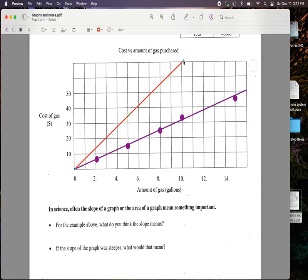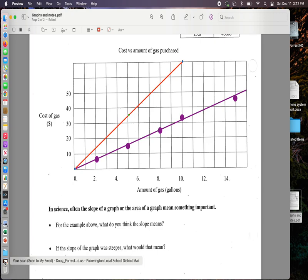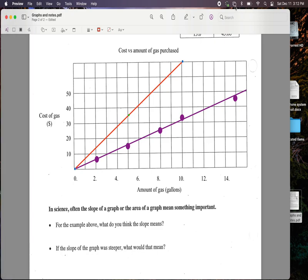With something like this, that means I'd have to spend about $60 to get 10 gallons of gas. So the slope of the line tells us something about the cost. All right. That's all I think I've got for this.